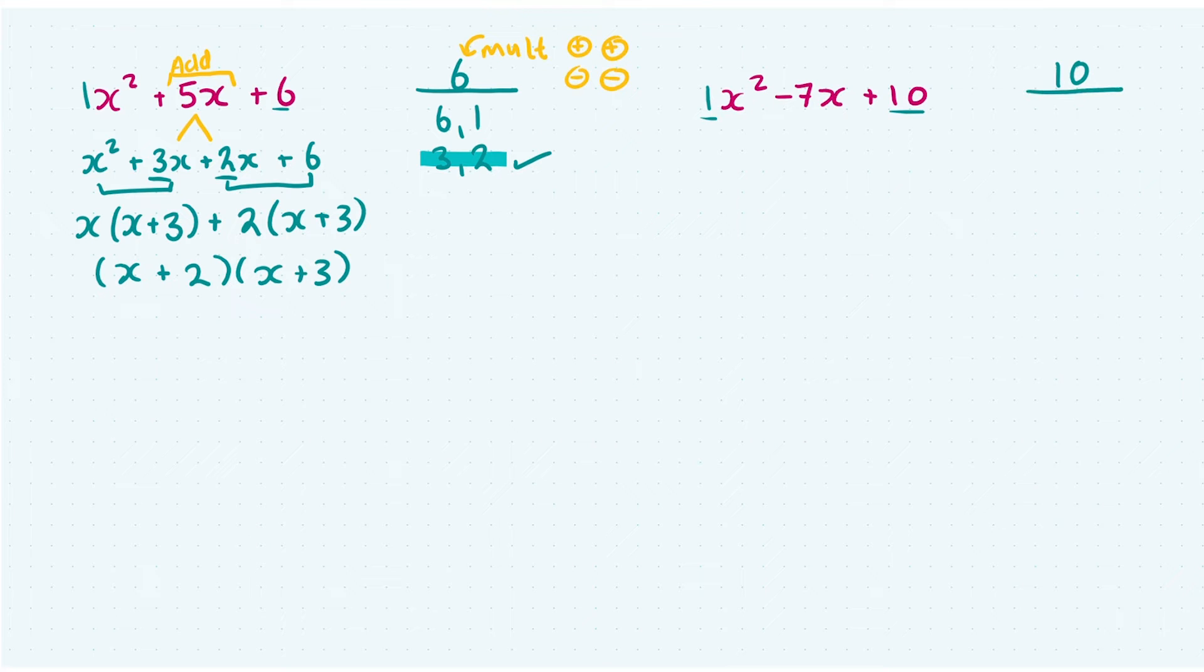And it's a positive 10, so they're both going to be positive, or they're both going to be negative. And I'm going to list the factors of 10. We have 10 and 1, or we have 5 and 2. And I have to think, which of these pairs does 10 plus 1, or minus 10 plus minus 1, give me the minus 7 in the middle?